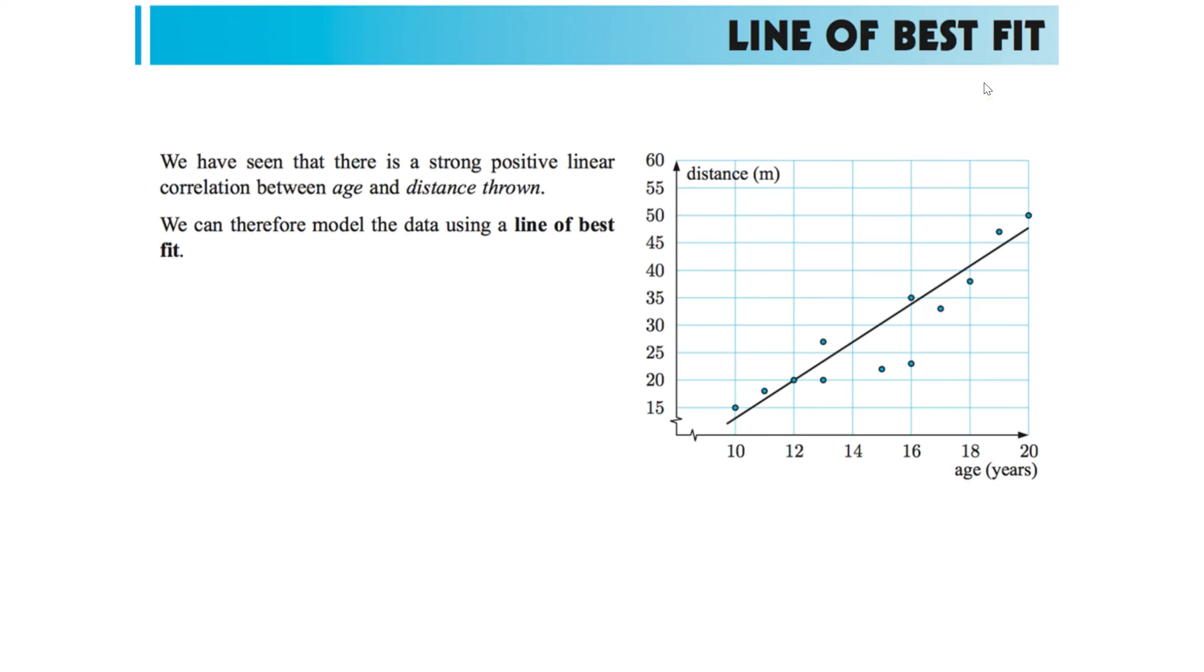Line of best fit. So now that we know where the correlation is, when we have a correlation, we can find the line that fits the data the best. We can try to find the equation for that data set. So let's look here. We have this data. It looks like it's positive. It's going up.